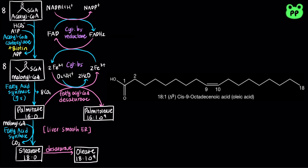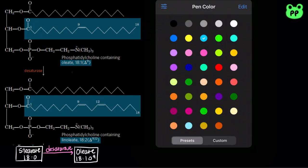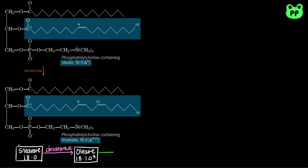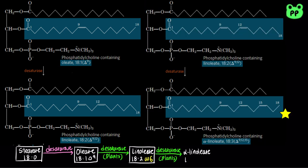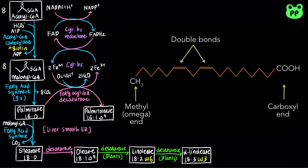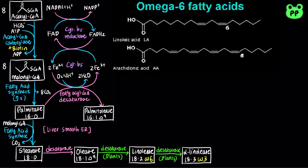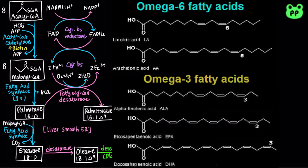Mammals cannot synthesize additional double bonds between carbon-10 and the methyl terminal end. Only plants and other microbes contain desaturases that can oxidize phosphatidylcholine-bound oleate to synthesize polyunsaturated fatty acids linoleate, which is an omega-6 fatty acid, as well as alpha-linoleate, which is an omega-3 fatty acid. Recall that omega refers to the carbon at the methyl terminal end. Therefore, omega-6 fatty acids contain double bonds ending at the 6th carbon from the methyl terminal, whereas omega-3 fatty acids contain double bonds ending at the 3rd carbon from the methyl terminal.